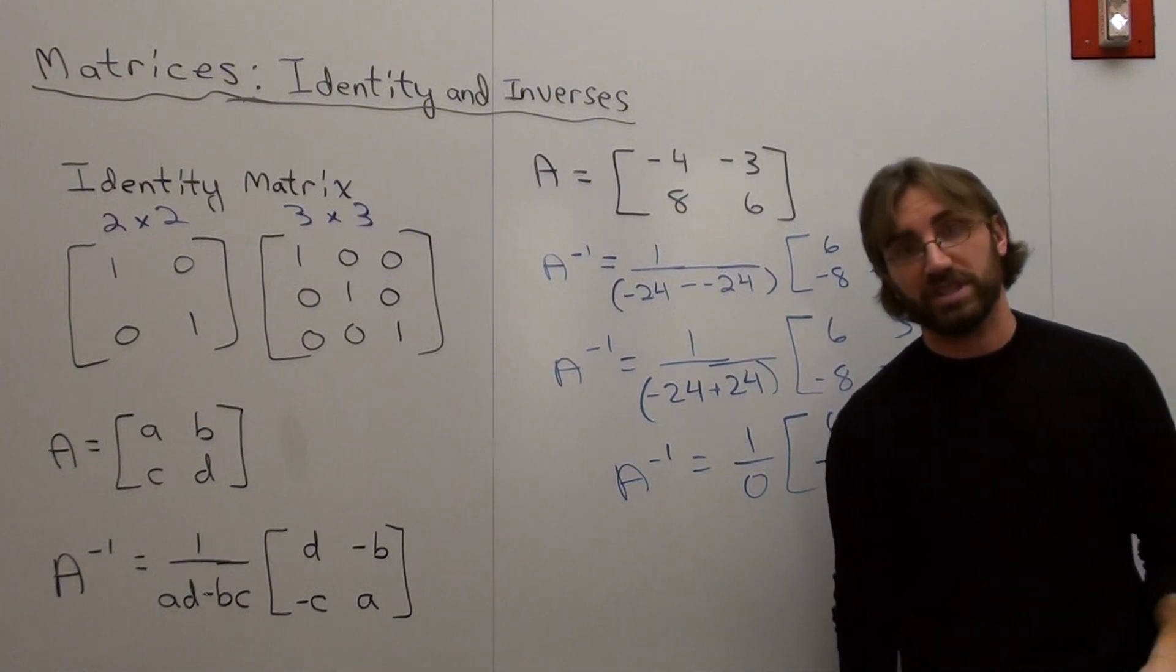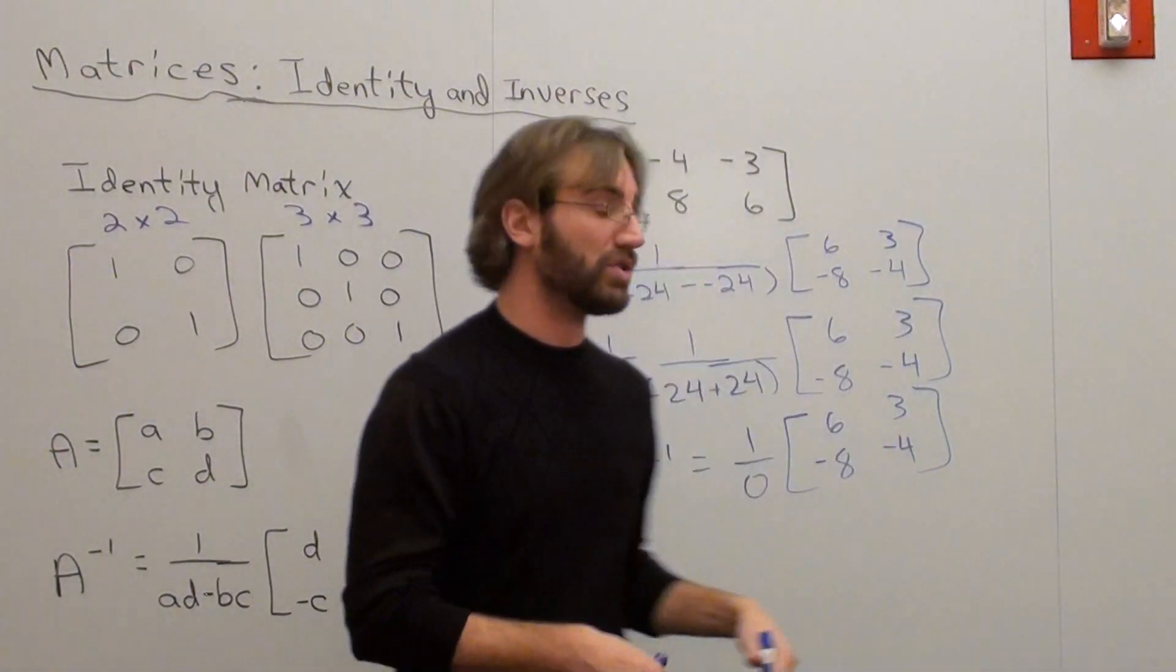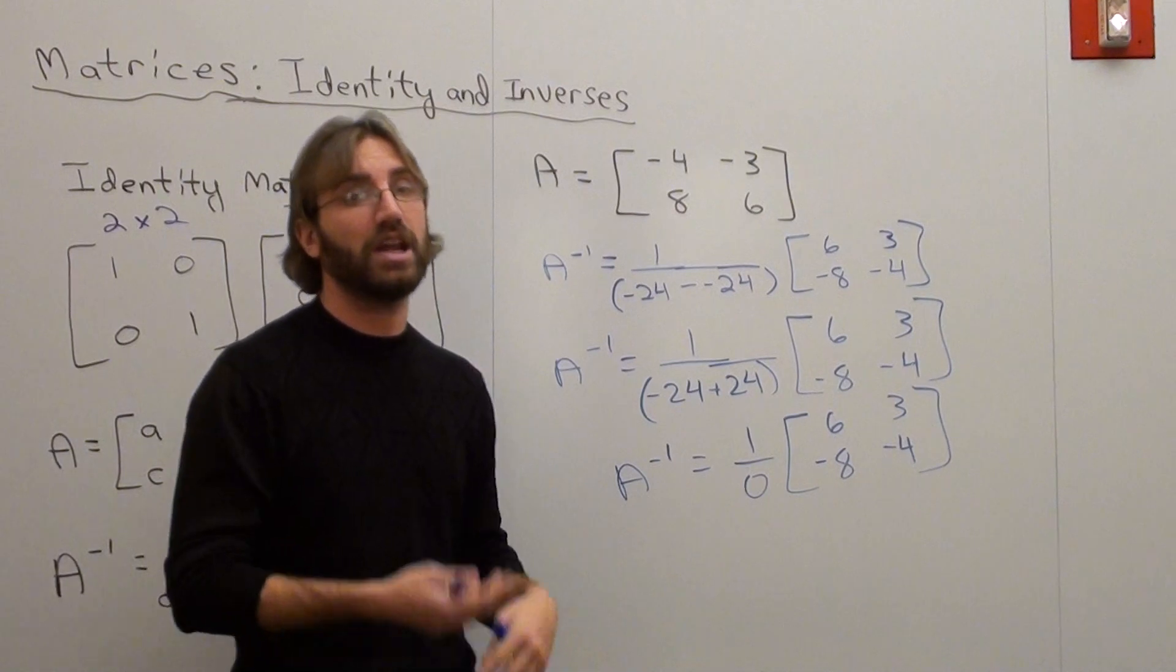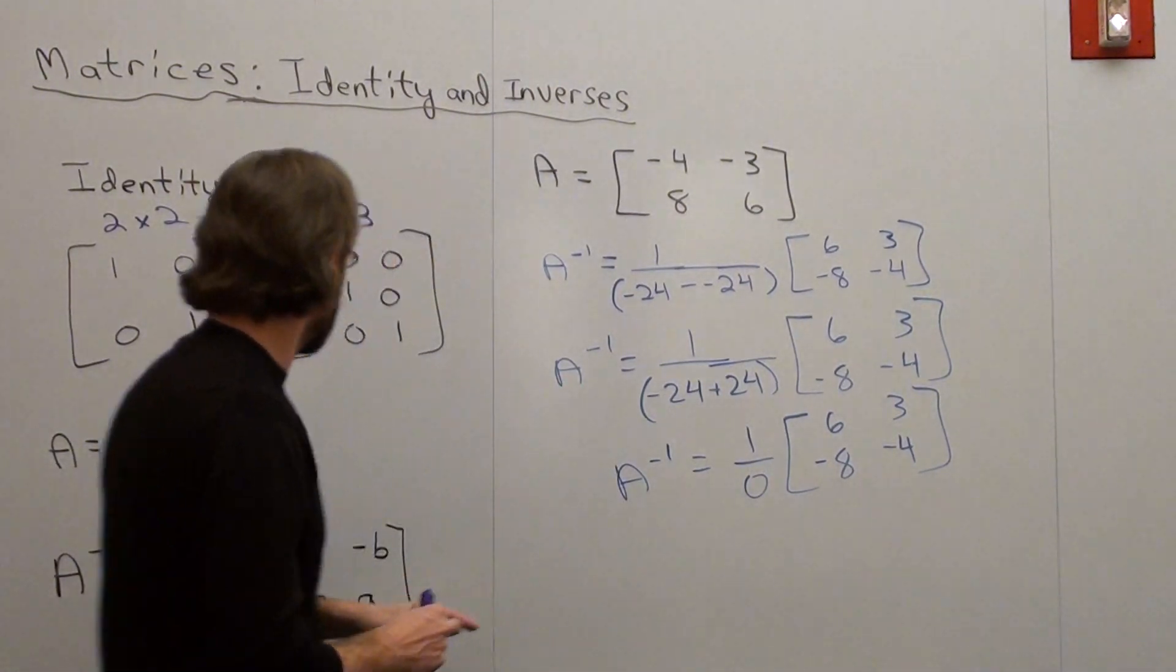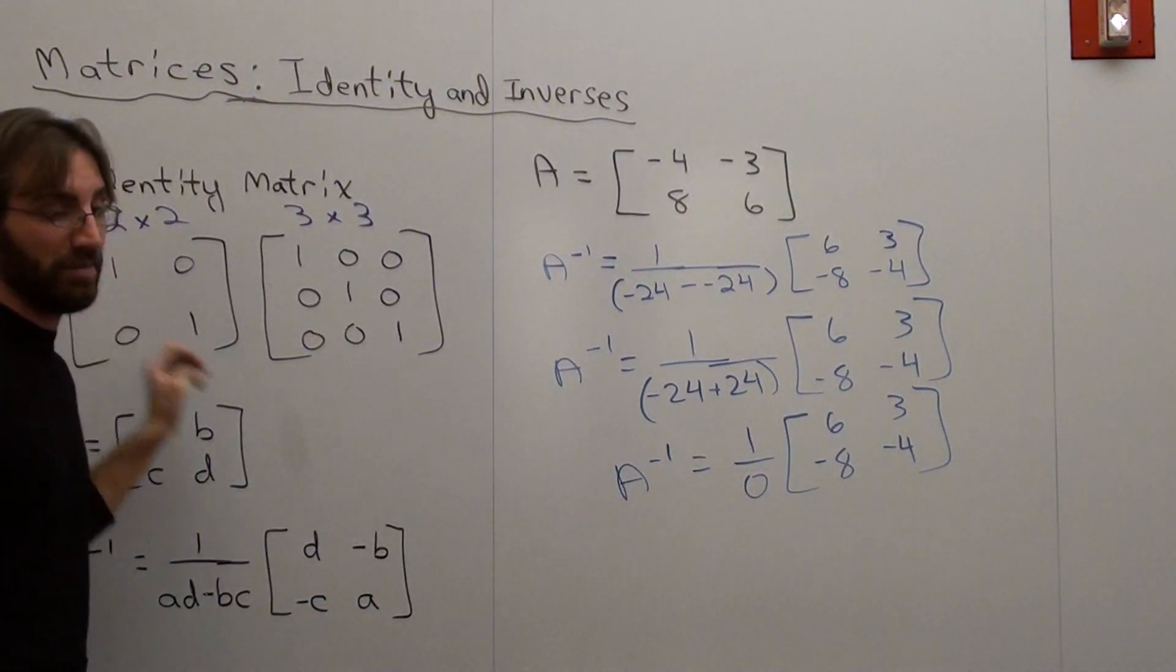There is no matrix that, excuse me, there is no inverse to this matrix. Since that's 0, it makes it undefined. No inverse actually exists. That will make it equal to an identity matrix.